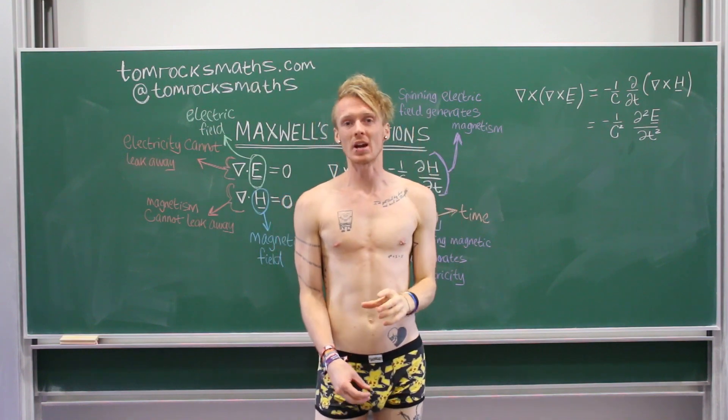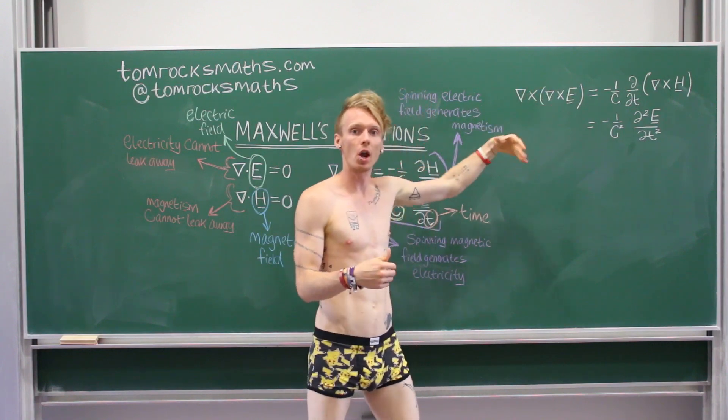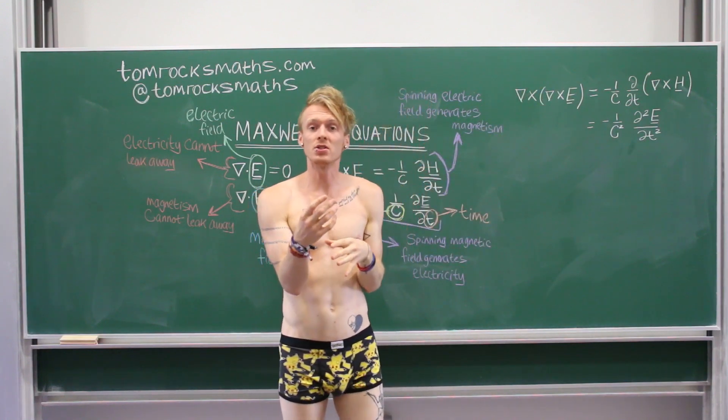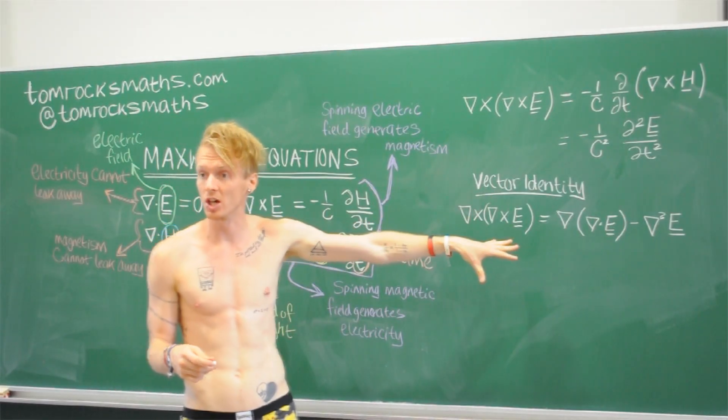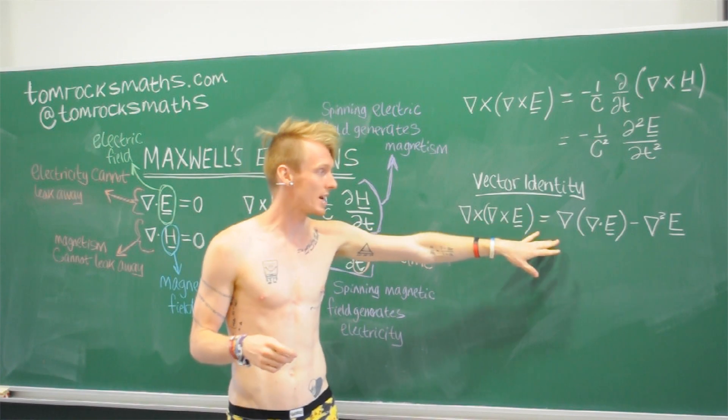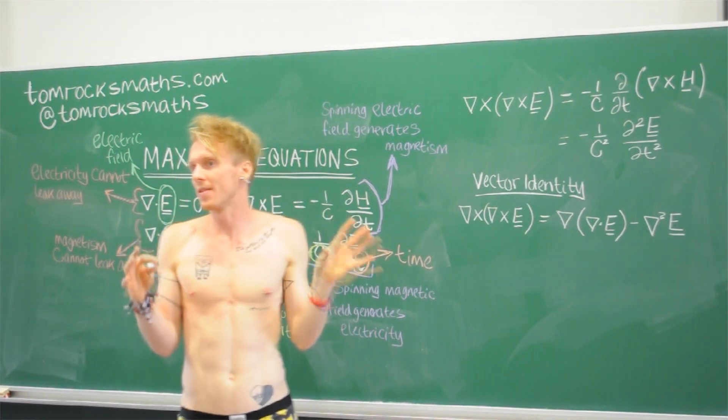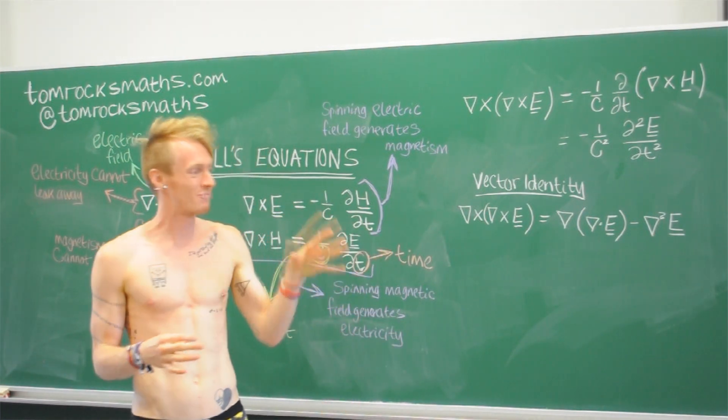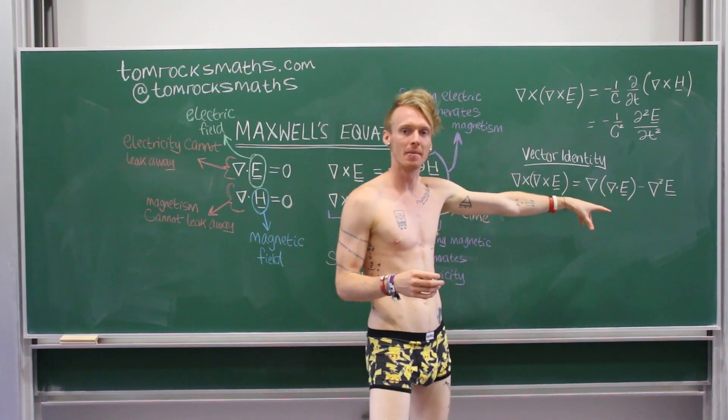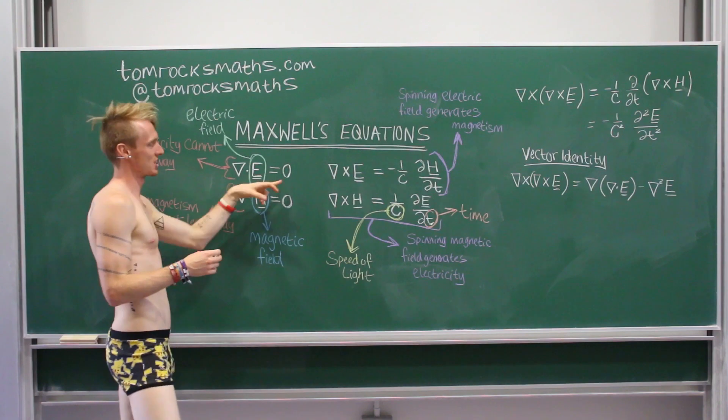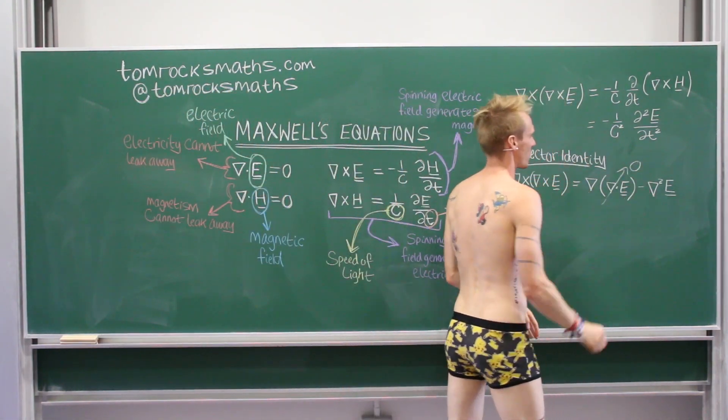And then we need one final trick to get to where we want to be. And we need to simplify this term, the curl of the curl of E. And what I'm going to do is use a vector identity. So, this is our vector identity, the curl of the curl, and it's equal to the gradient of the divergence minus the Laplacian of E. And you don't need to know exactly what all of that means, but what is really important about this, and really great, is we have this divergence of E, this grad dot E term. And we know from this equation that that's zero. So, this term here is actually just zero. And so, now we can simplify everything.